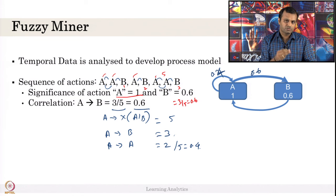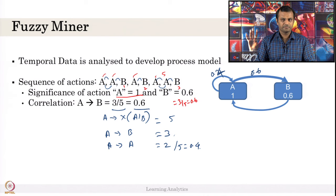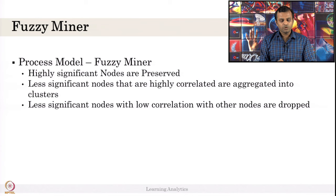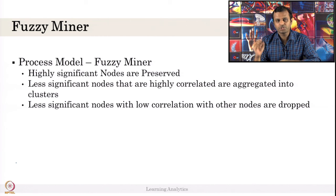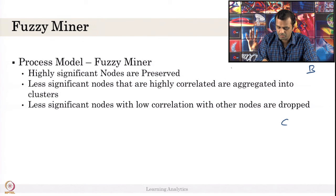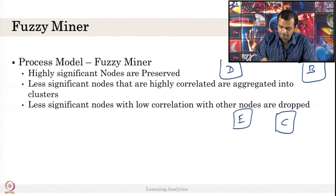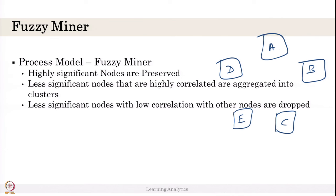For fuzzy miner, we apply 3 rules to abstract the process model. For other algorithms, rules might change, but the basic elements are significance and correlation. Rule 1: highly significant nodes are preserved — nodes which are more significant are kept and will not be removed. Consider nodes A, B, C with significance values like 0.8, 0.8, 0.7 — these highly significant nodes will be preserved. The less significant nodes with values like 0.1 and 0.3 may be removed.